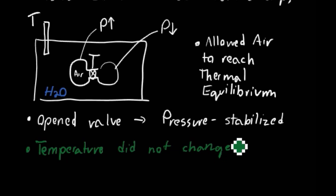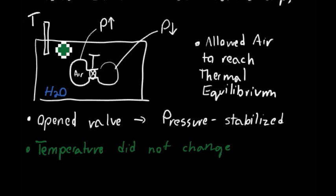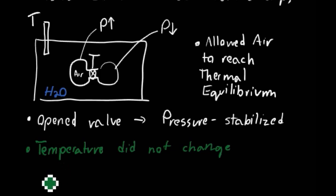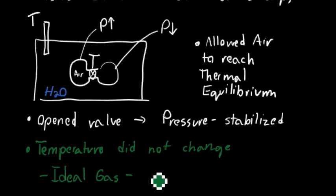What he found was that the temperature did not change. This told him that if there's a certain amount of energy in the air, a change in pressure or volume is not going to affect the energy of the system — as confirmed by the temperature measurement of the external part of the container. So for an ideal gas, the internal energy is purely a function of temperature.